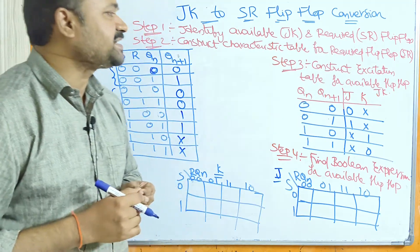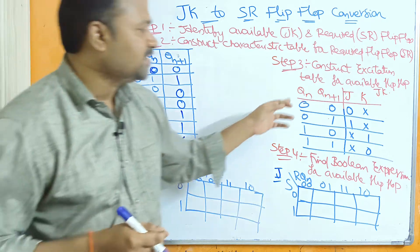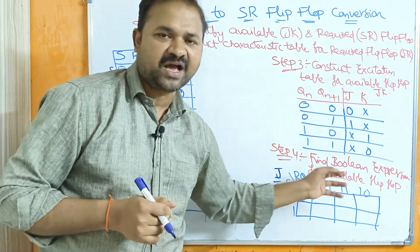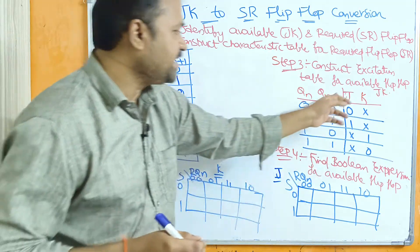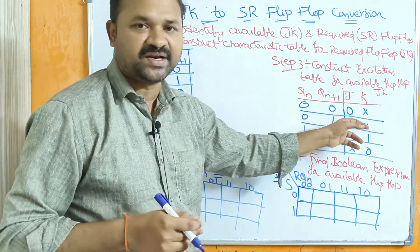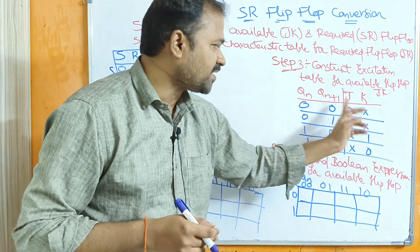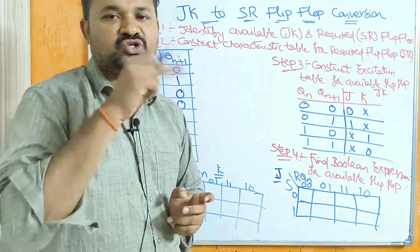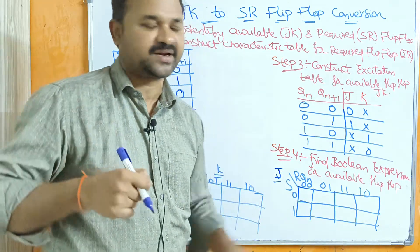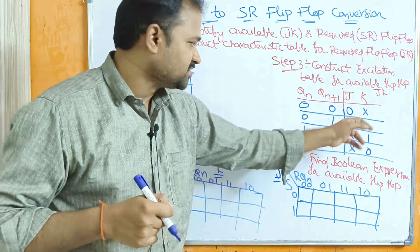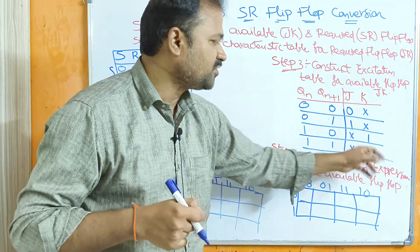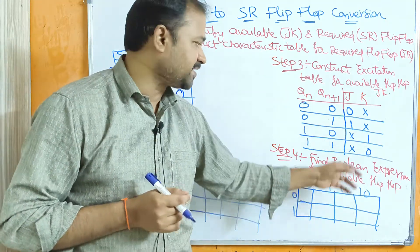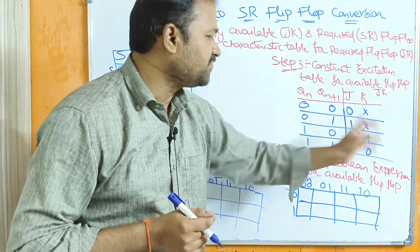Step 3 is construct the excitation table for the available flip-flop, that is JK flip-flop. Here Qn and Qn+1 are the inputs, whereas J and K are the outputs. If there are 2 inputs, then we will have 4 combinations: 0,0 / 0,1 / 1,0 / 1,1. If you observe the J column: 0, 1, don't care, don't care. And K is the reverse of J: don't care, don't care, 1, 0. So J column is 0, 1, don't care, don't care and K column is don't care, don't care, 1, 0. It is very easy to remember the excitation table for the JK flip-flop.